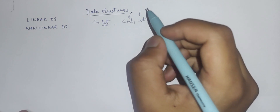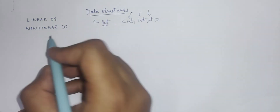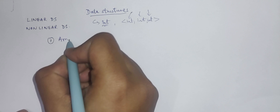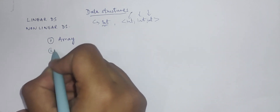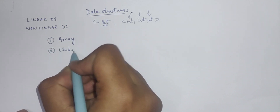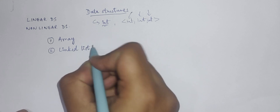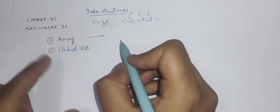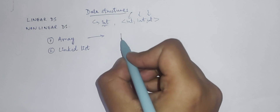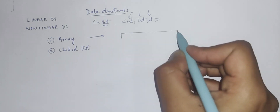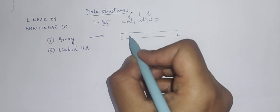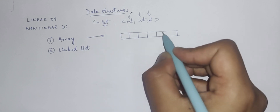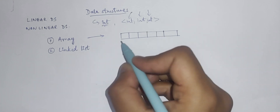Now considering linear data structures, there are two very important ones. One is arrays and then we have linked lists. An array is a data structure which holds all related data items in one contiguous block of memory.